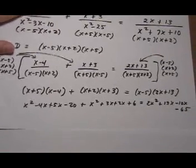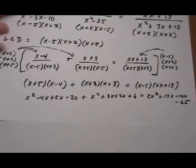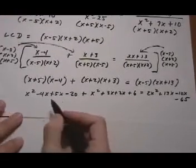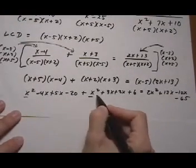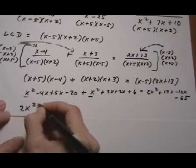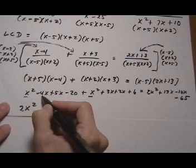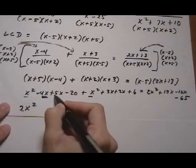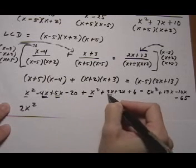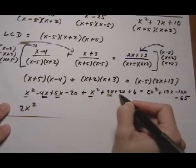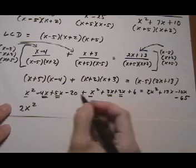So let's go ahead and combine like terms. So we have x squared x squared that gives us 2x squared. So then we look at the x's. We have minus 4x plus 5x so that's 1x plus 3x is 4x plus 2 is plus 5x.